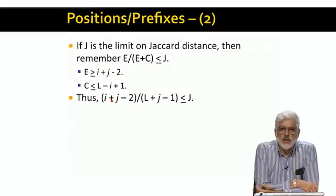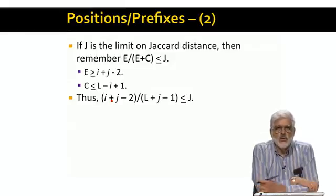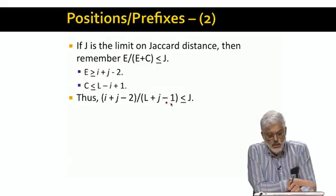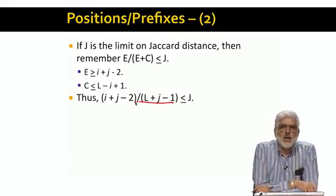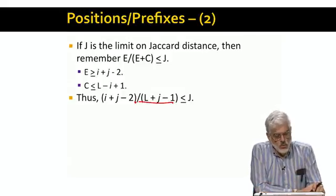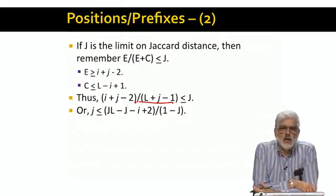But there's more messy math. Our goal is to isolate little j. So we can multiply both sides of the inequality by L plus J minus 1. Rearrange the terms and voila, you get an upper limit on little j, the position of the second string, such that I and J are the first matching positions of the first string.